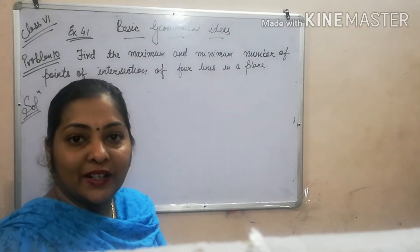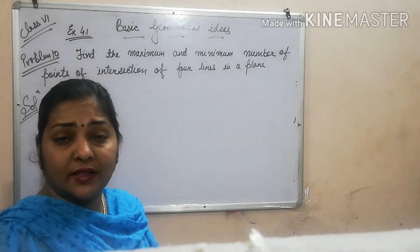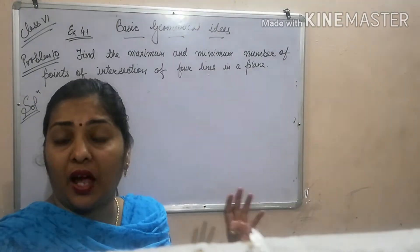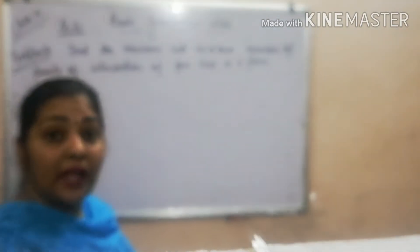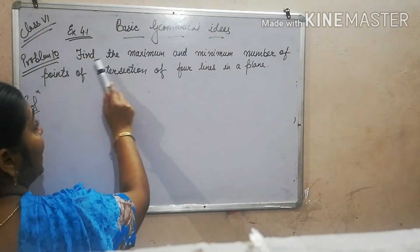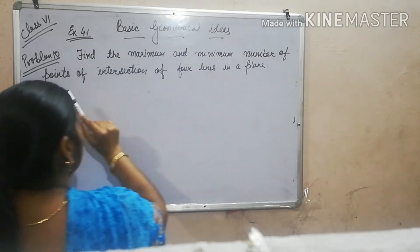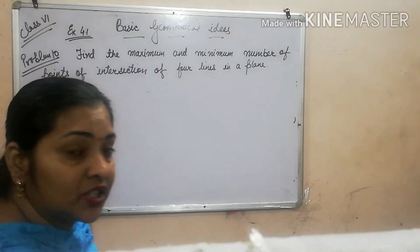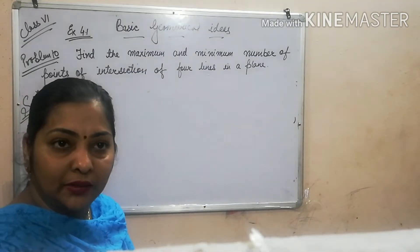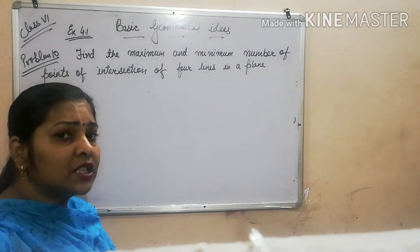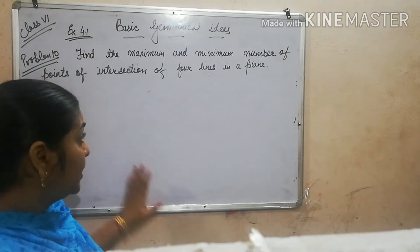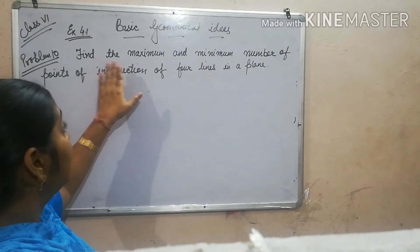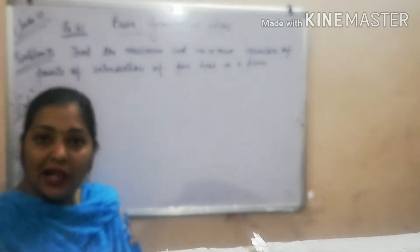Good afternoon dear students. We were discussing about the basic geometrical ideas. Now let me tell you about our next problem. You have to find the maximum and minimum number of points of intersection of four lines in a plane. In the previous problem we discussed about three lines in a plane, and now in this problem we have to tell the maximum and minimum number of points of intersection of four lines in a plane.